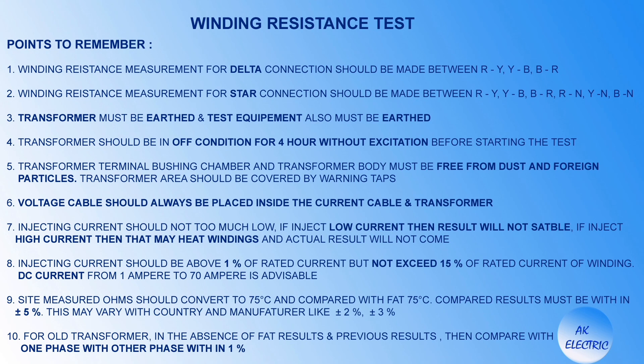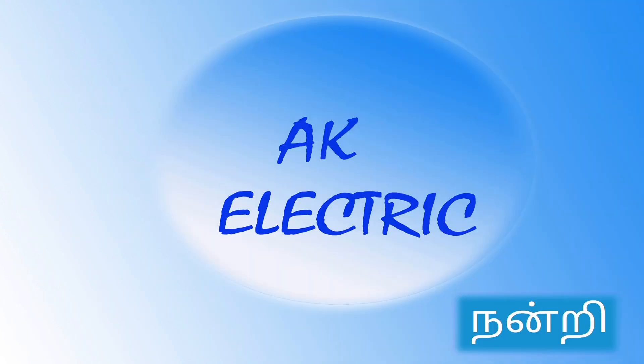DC current from 1A to 17A is advisable. Site measured ohms should be converted to 75°C and compared with FAT 75°C values. Compared results must be within plus or minus 5 percent — this may vary by country and manufacturer, such as plus or minus 2% or 3%. For old transformers without FAT results or previous records, compare one phase with another — that must be within 1 percent. I hope this video is informative to everyone. If you like this video, subscribe, like, and click the bell icon. Thank you.